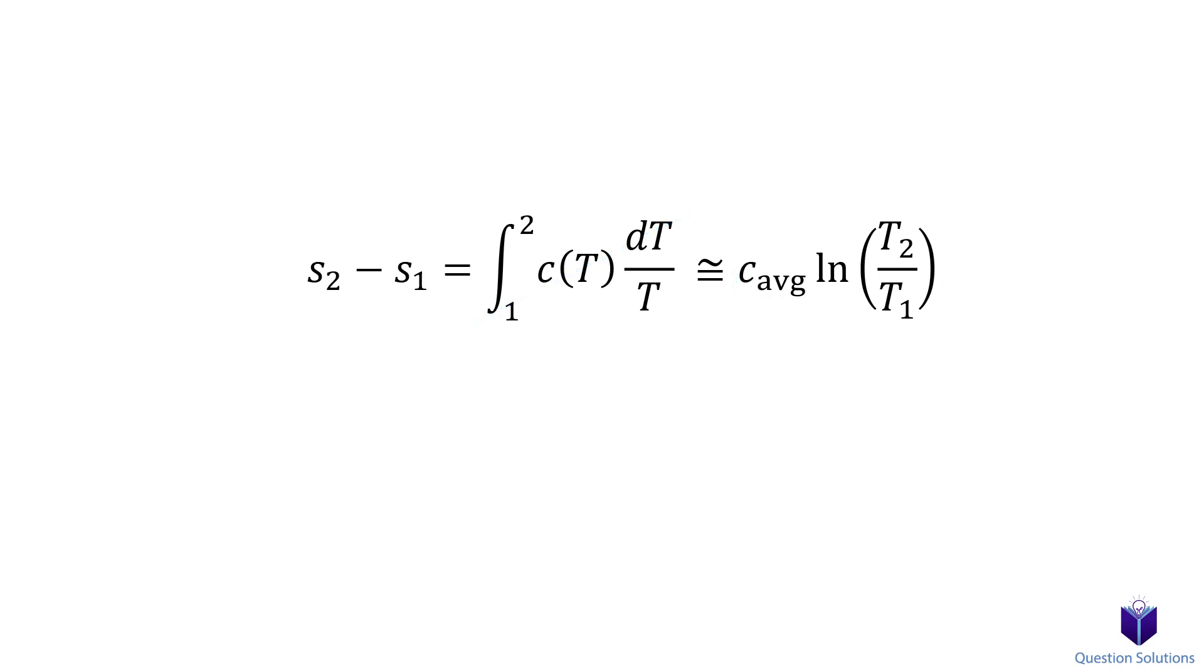So to solve for entropy change, you need the final temperature and the initial temperature. Note that this equation is written per unit mass basis. If you need the total change in entropy without it being per unit mass, it looks like this.